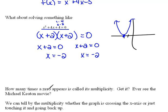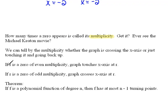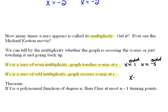How many times a zero or x-intercept appears is called its multiplicity. There was a Michael Keaton movie called Multiplicity where he made multiple copies of himself — that will help you remember it. We can tell by the multiplicity whether the graph is crossing the x-axis or just touching it and going back up. If we have a zero of even multiplicity, then it touches. If we have a zero of odd multiplicity, it crosses. Back in our first example, x equals 1 and x equals negative 5 each only happened one time — that's odd multiplicity, so the graph crossed there. In our second example, x equals negative 2 happened twice — that's even multiplicity, so the graph touches there.